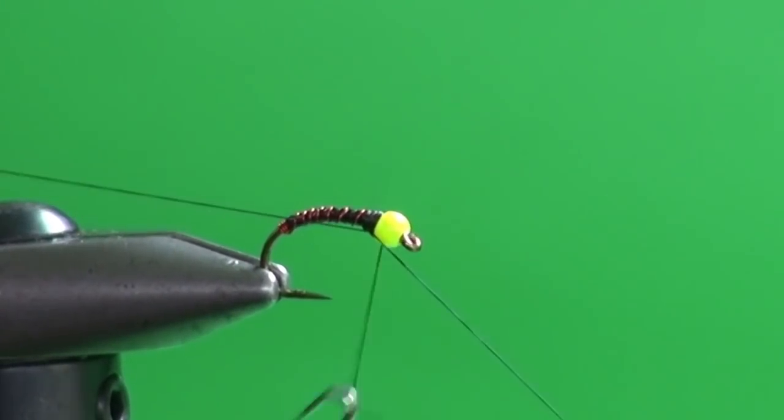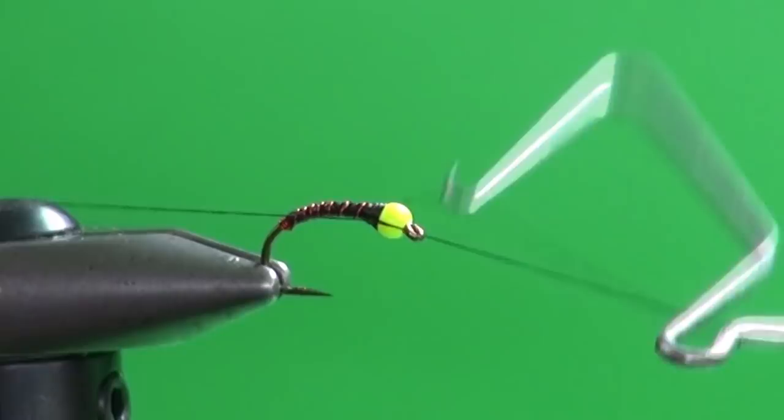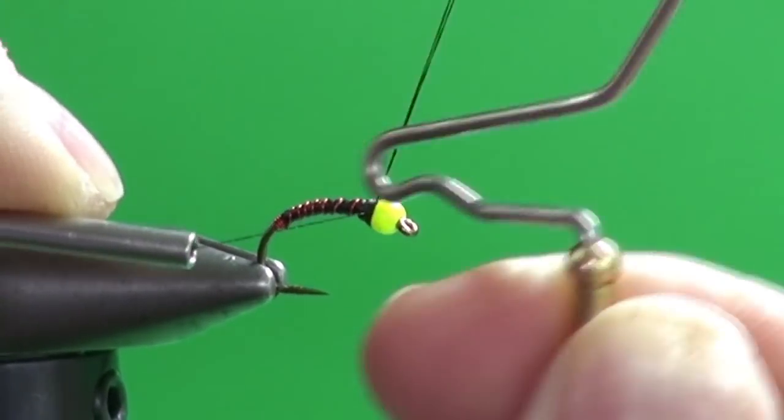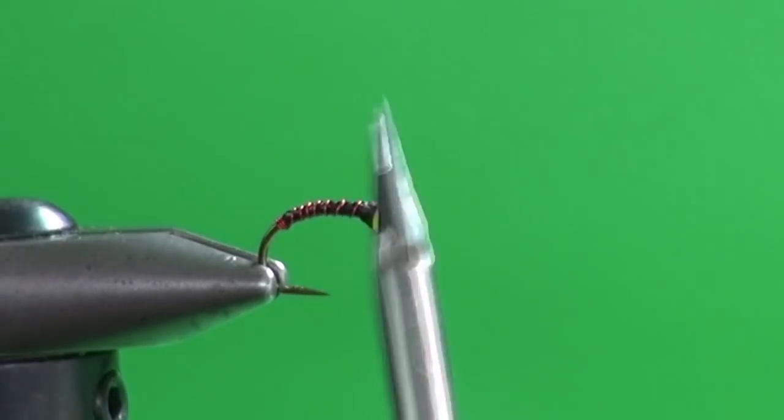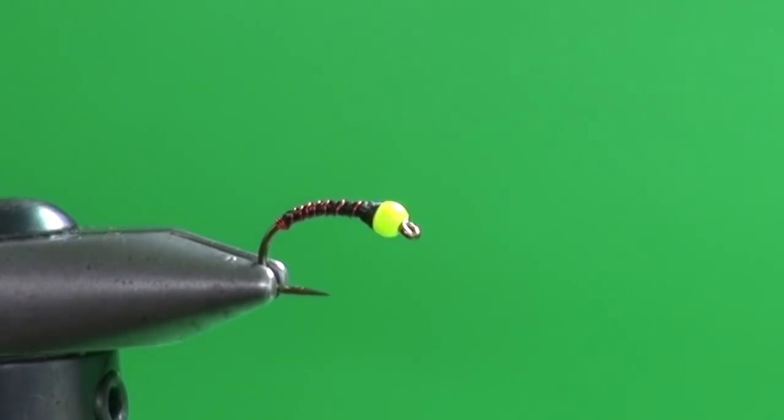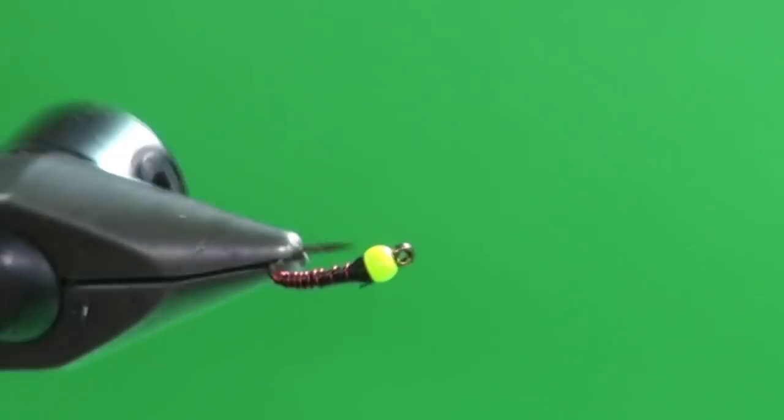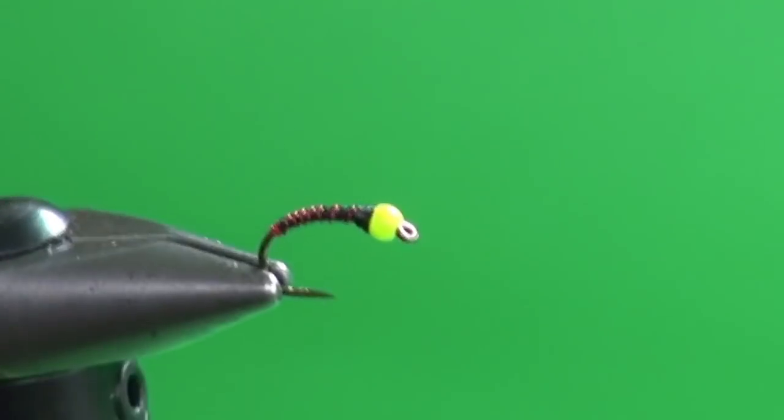Introduce our whip finisher. And remember to try and make straight wraps across so you end up with a nice, balanced thorax all around the fly. Sometimes if you go with a kind of a cross wrap like this, you'll end up with a nice thorax on this side and a bit of a skinny one on that side.